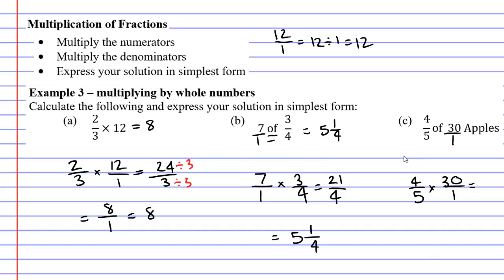So when we multiply this out, 4 times 30 is 120, and 5 times 1 is 5. Now just remembering that fractions can be treated as division.